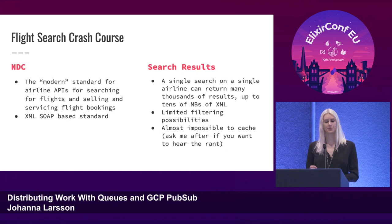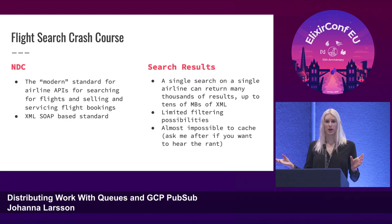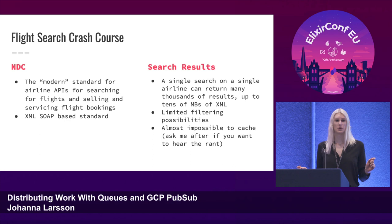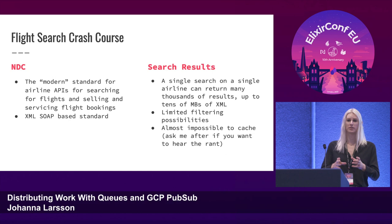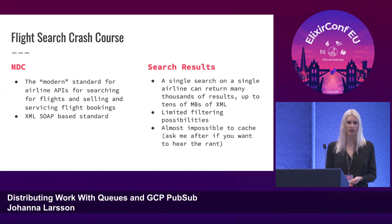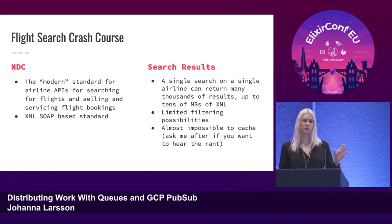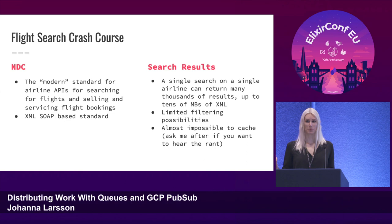Today we're going to talk specifically about search. When you do a search, you send it out to an airline — you give it the number of passengers, departure dates, and a route. A single search on a single airline can return many thousands of results; every result is an offer you can book. These are sent in XML format, which often ends up being tens of megabytes. It's not unusual to get 40 megabytes of XML back from one airline for one search. These APIs also have very limited filtering capabilities.